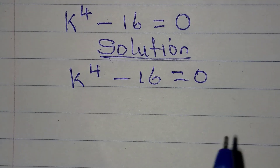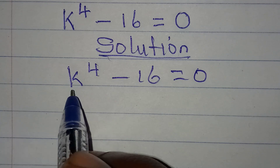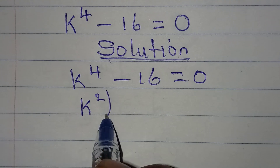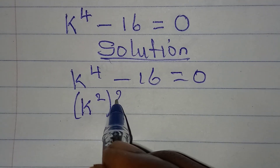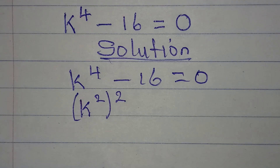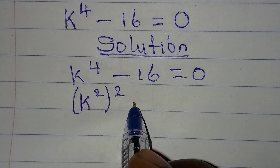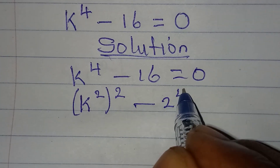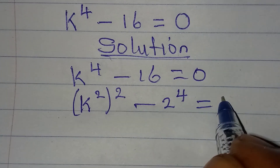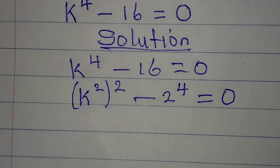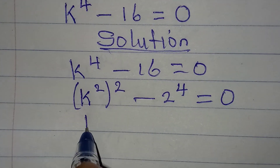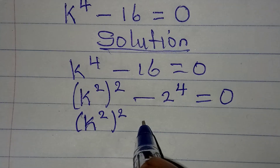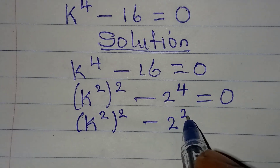See how we'll get all of them. Remember, k to the power of 4 is the same thing as k squared to the power of 2, because you multiply the powers. And minus 16 is the same thing as 2 to the power of 4. So we can rewrite this as k squared to the power of 2 minus 2 squared to the power of 2, all equal to zero.